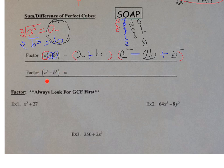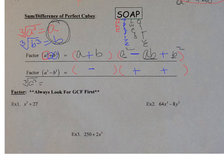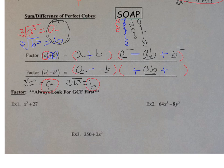Now let's set up the difference of perfect cubes A³−B³. Set up two parentheses — smaller and bigger. Since there's a subtraction, using SOAP: first sign is the same (minus), next is opposite (plus), last is always positive. Cube root of A³ is A, cube root of B³ is B. Small parenthesis: A and B. Large parenthesis: middle is A×B, front is A², end is B².